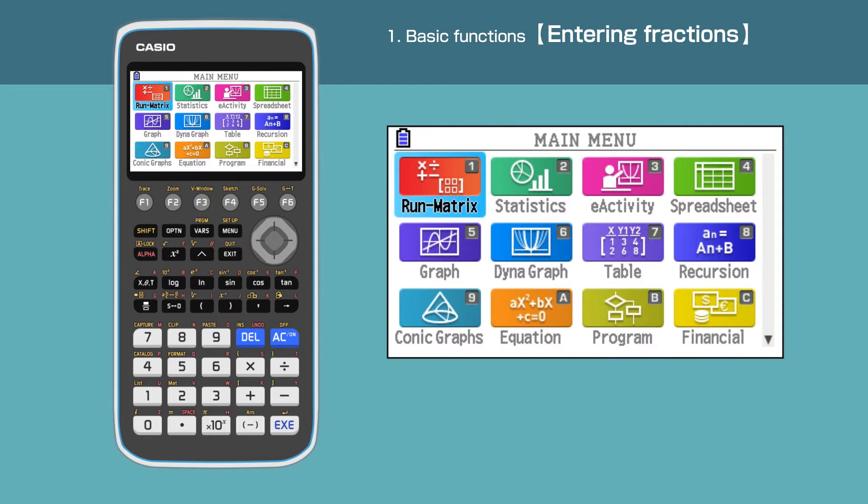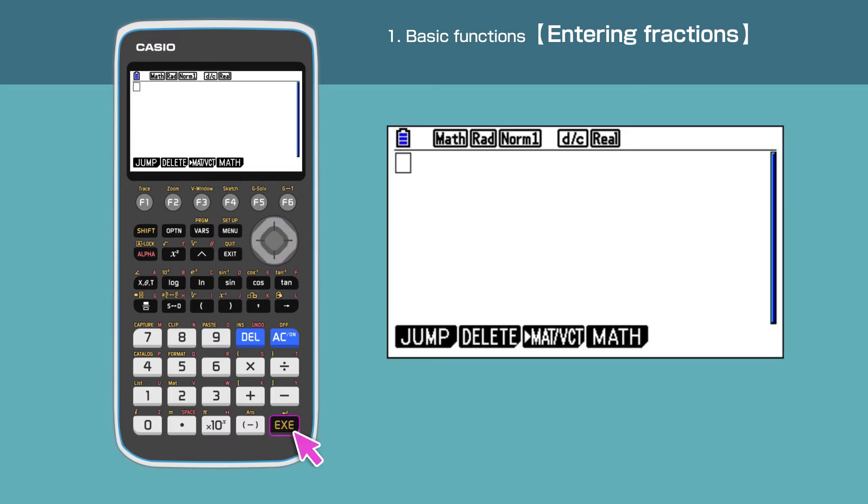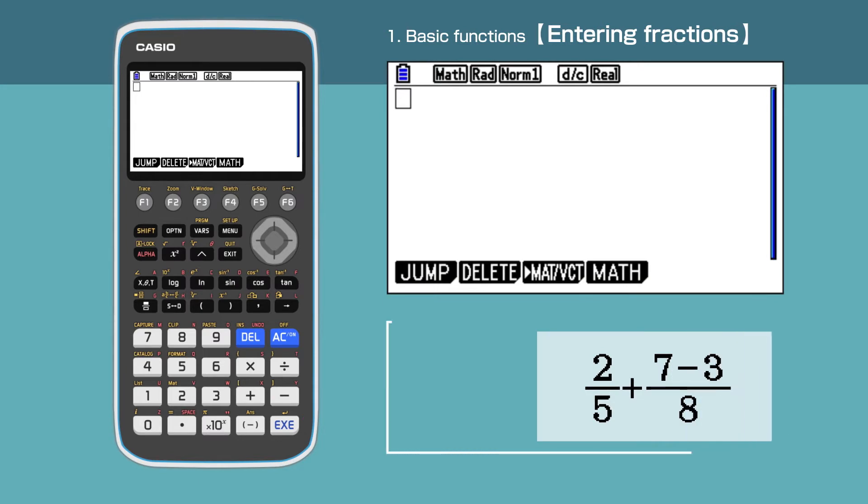Press 1 to enter the Run-Matrix menu, or move the cursor to highlight Run-Matrix, then press execute. First, we'll show how to enter fractions. Press the fraction button and enter 2 in the numerator box.